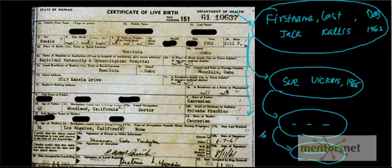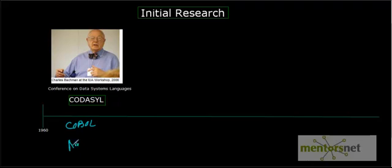Whenever the database starts for the first time, the pointer points to the first record and then navigates through this bunch of interconnected links to get you the information. For example, if you want to find out how many people were born in 1962, you start from the very beginning, navigate through all records to the end, and whenever you find a date of birth of 1962 you increment your counter. This approach is called the navigational database model, or navigational DBMS. It is called navigational because we navigate from one record to another.